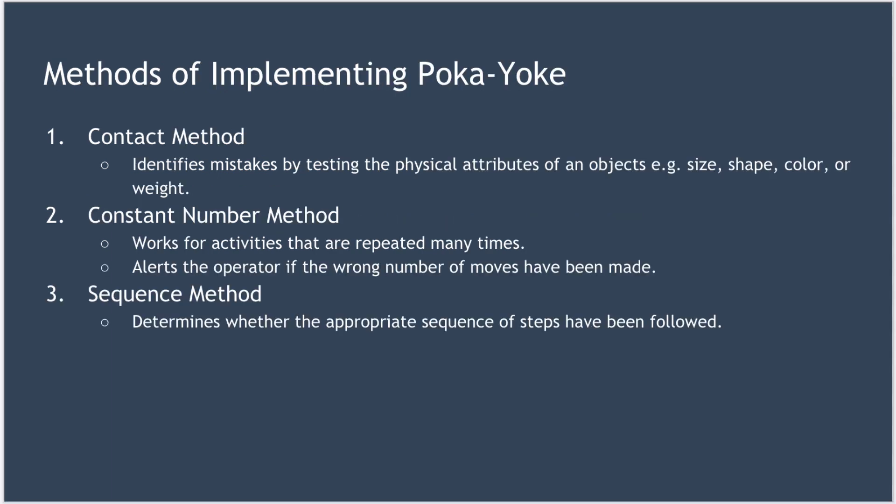Each of those two types of Poka-Yoke can be implemented using one of three methods. The first is the contact method, which identifies mistakes by testing the physical attributes of an object — for example, its shape, size, colour, or weight. The next is the constant number method, which works for an activity that is repeated many times and alerts the operator if the wrong number of moves has been made. And finally, we have the sequence method, which determines whether the appropriate sequence of steps has been followed.